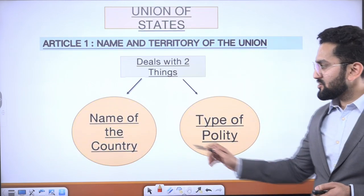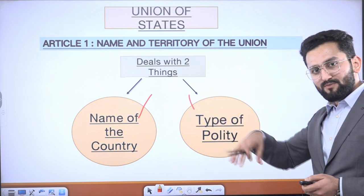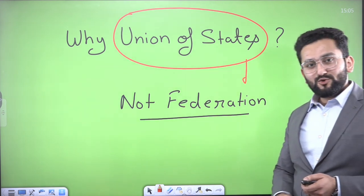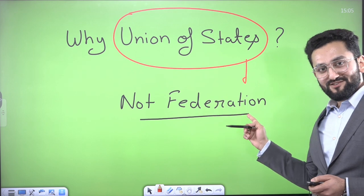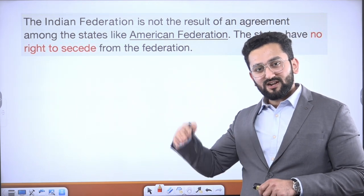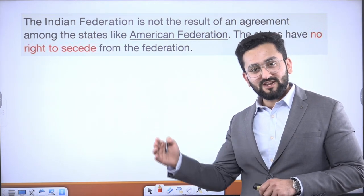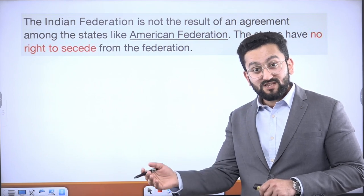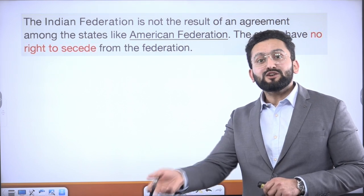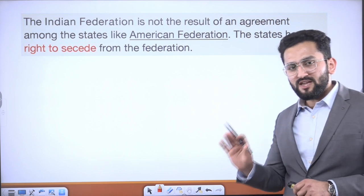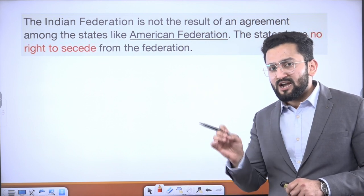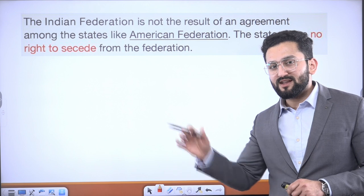So I hope the point is quite clear: the name of the country, the type and structure, the administrative units — this is what is mentioned in Article 1. The point about why 'Union of States' is used and not 'federation' is also clear. We are different from the American federation because in the American federation, if they want to alter the boundary of a state, they need the assent of that state. But in India, it is not necessary to have the assent of the state. The procedure is mentioned in Article 4.